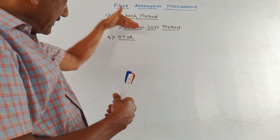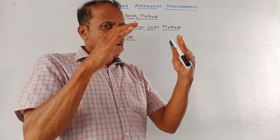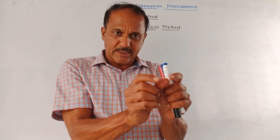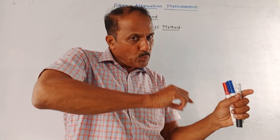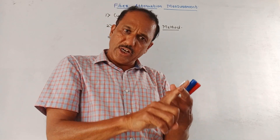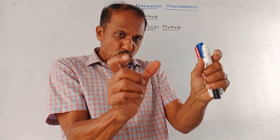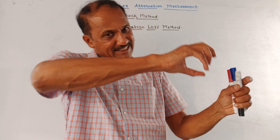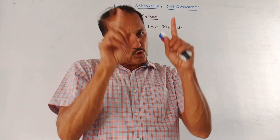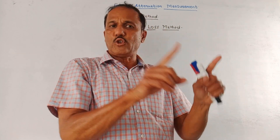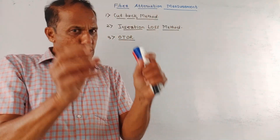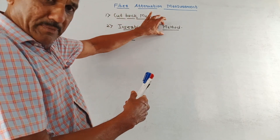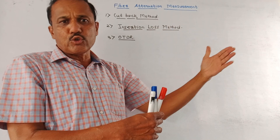Second is the insertion loss method, used for daily use purposes and comparatively very simple. Without connecting the fiber optic cable, first measure the output power of the light source and note those readings. Then connect the fiber optic cable and at the output again measure the power. The difference between the two power readings directly gives you the attenuation. The problem is that the connectors should be properly connected with minimal loss; otherwise, the readings will not be accurate.